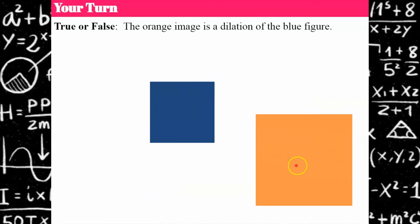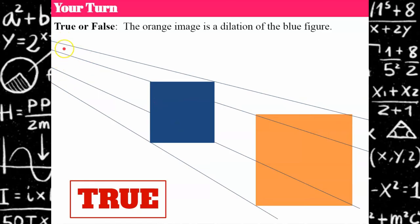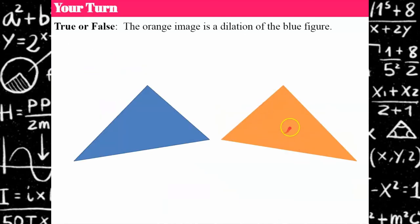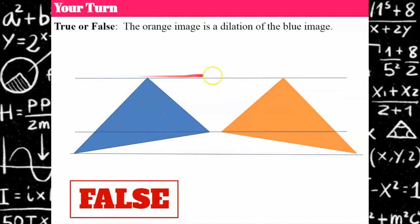True or false: the orange image is a dilation of the blue figure. Welcome back — these lines are going to intersect; they're not parallel. When lines are not parallel, they will eventually intersect, and you can see all of the lines converge to a point. The orange image is definitely a dilation of the blue and it's an enlargement. In the previous false example, connecting the vertices gives parallel lines that never intersect — that's a reflection, not a dilation.